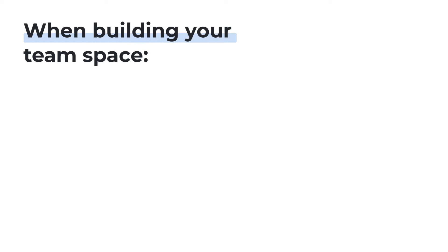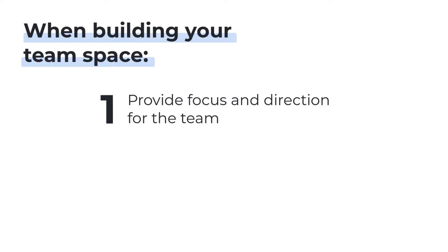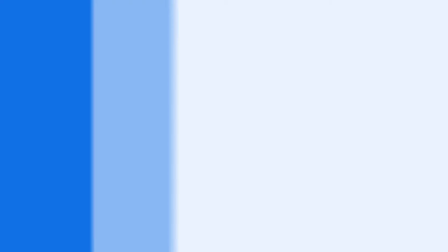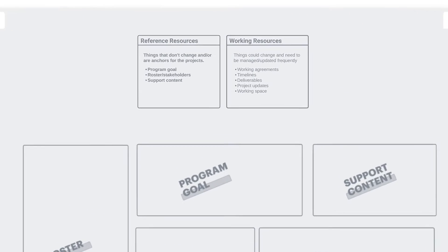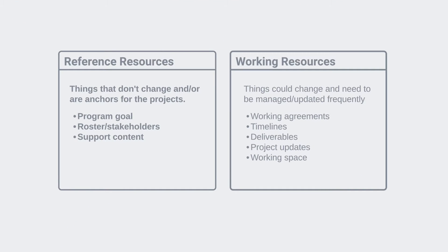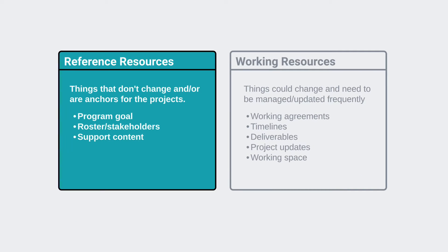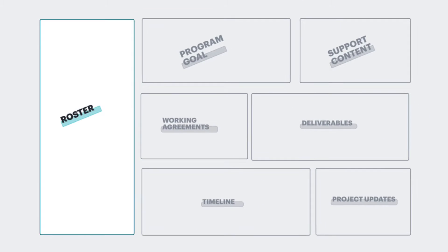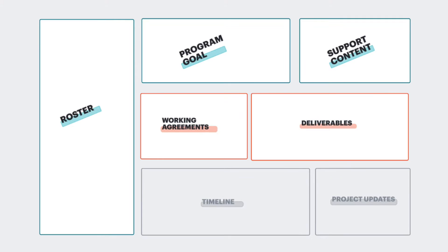When building your team space, you should include information that will first provide focus and direction for the team, and second help the team work more cohesively together. We view this information as two different types — reference resources and working resources. There are categories within each of these types, and those are given their own frames on the board to keep the space organized.